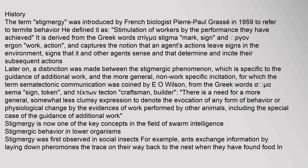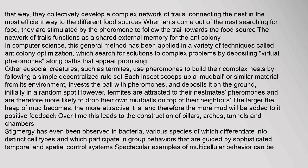Stigmergy is now one of the key concepts in the field of swarm intelligence. Stigmergy was first observed in social insects. For example, ants exchange information by laying down pheromone traces on their way back to the nest when they have found food. In that way, they collectively develop a complex network of trails connecting the nest in the most efficient way to the different food sources. When ants come out of the nest searching for food, they are stimulated by the pheromone to follow the trail towards the food source.